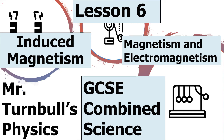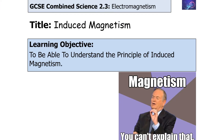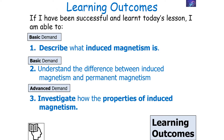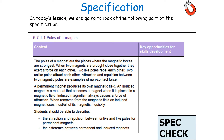Hello and welcome to this lesson on induced magnetism, which is part of the magnetism and electromagnetism topic in GCSE combined science physics. In today's lesson we're going to understand the principle of induced magnetism, describe what induced magnetism is, understand the difference between induced and permanent magnetism, and investigate its properties. This links into AQA combined science GCSE section 6.7.1.1 on poles of a magnet, particularly the difference between permanent and induced magnets.